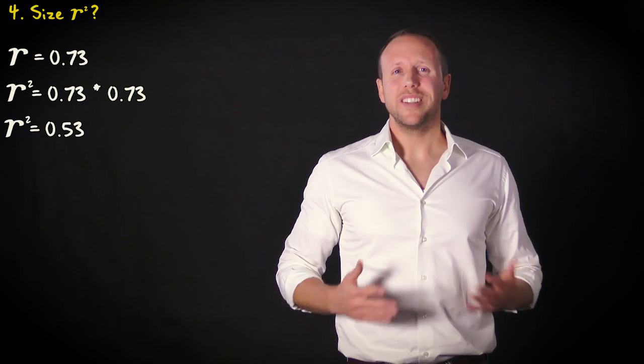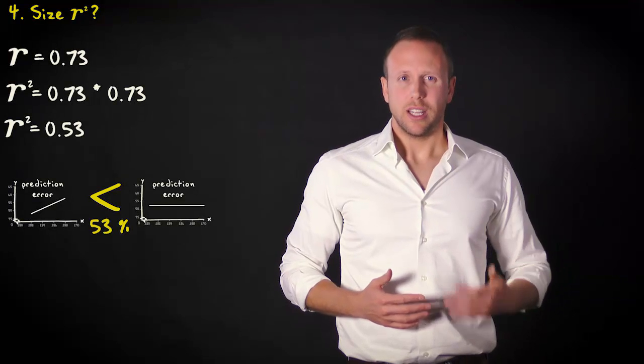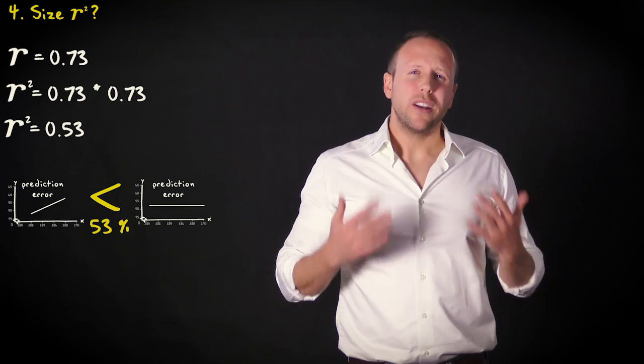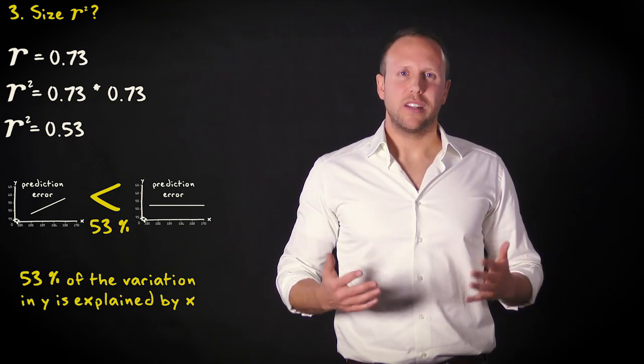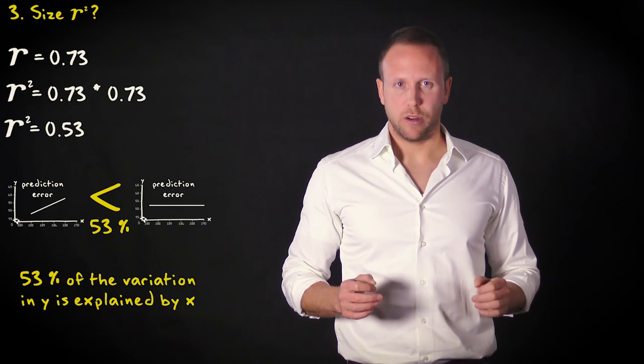But how should we interpret this number? Well, we can say that the prediction error is 53% smaller when we use the regression line than when we employ the mean of the dependent variable. We can also say that 53% of the variation or the variance in the dependent variable is explained by our independent variable.